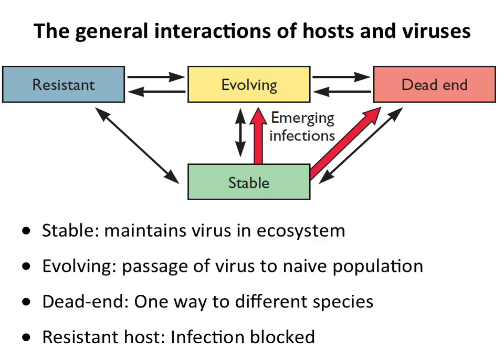Before discussing specific examples, let's go through some principles about the kinds of interactions viruses can have with their hosts. There are four general types: stable, evolving, dead-end, and resistant. A stable interaction maintains the virus continuously in people, animals, or both — it has a known effect and is transmitted effectively. An evolving interaction is what we see in emerging infections: a virus moves from a stable interaction into a different host. A dead-end interaction is when a virus jumps species but isn't transmitted serially. A resistant interaction is when the virus gets in but there's no replication or transmission.